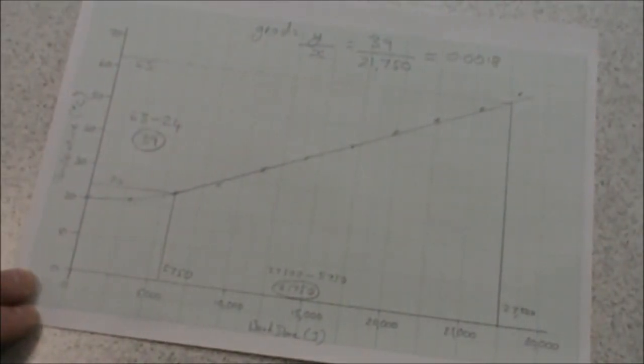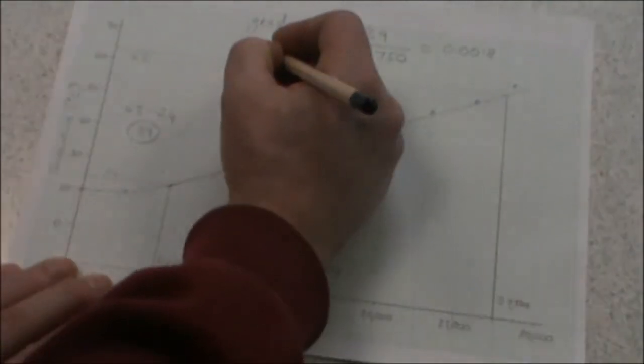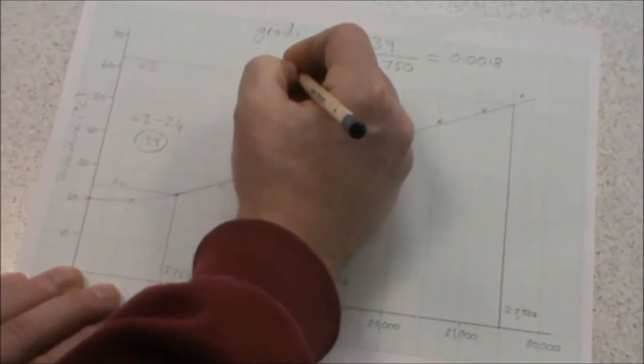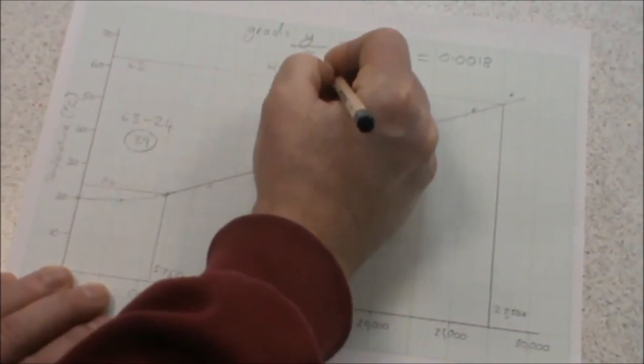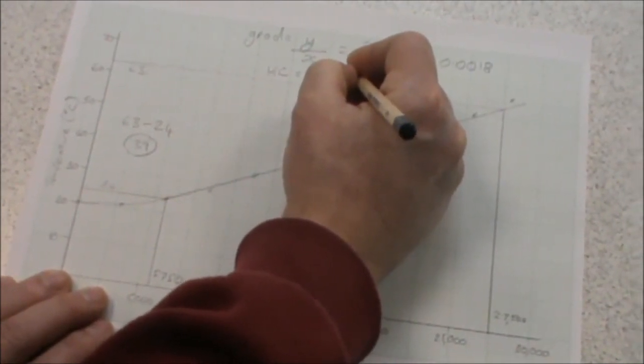To calculate the heat capacity, we do 1 over the gradient. On your calculator, you can just press the reciprocal button, which is x to the minus 1, or 1 over x. Or you can type it in again: we do 1 divided by 0.0018, which gives us a heat capacity of 555.5 recurring.